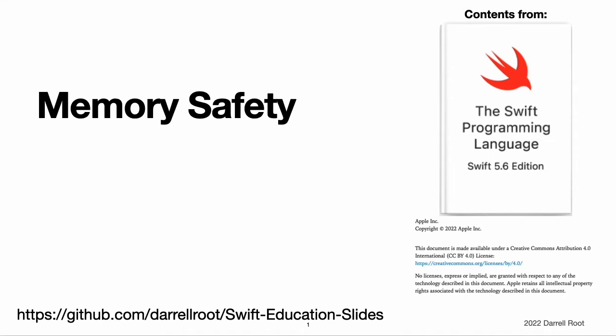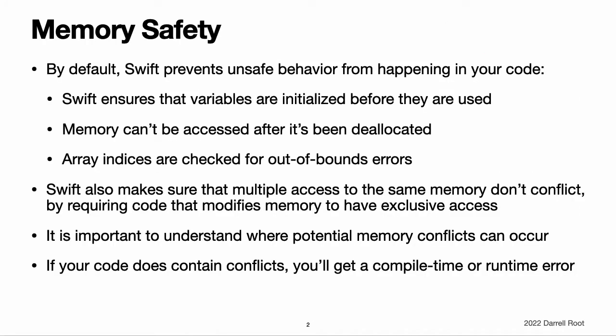Memory Safety. By default, Swift prevents unsafe behavior from happening in your code. For example, Swift ensures that variables are initialized before they are used, memory is not accessed after it has been deallocated, and array indices are checked for out-of-bounds errors. Swift also makes sure that multiple accesses to the same area of memory do not conflict by requiring code that modifies a location in memory to have exclusive access to that memory.